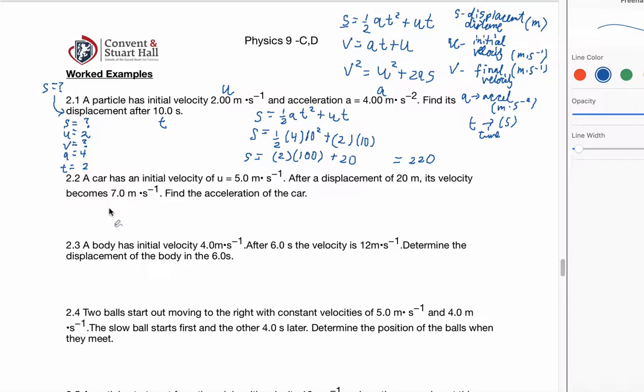Next, problem number two. We have a U of 5 meters per second. A car has an initial velocity. We have a displacement. Its velocity is 7. And we want to find the acceleration of the car. Now, one thing I notice, I'm going to actually not grab the first formula I think of, and I'll tell you why. Let's write out the SUVAT letters. S, U, V, A, T. So S is 20. U is 5. V is 7. A is unknown. And T is unknown.